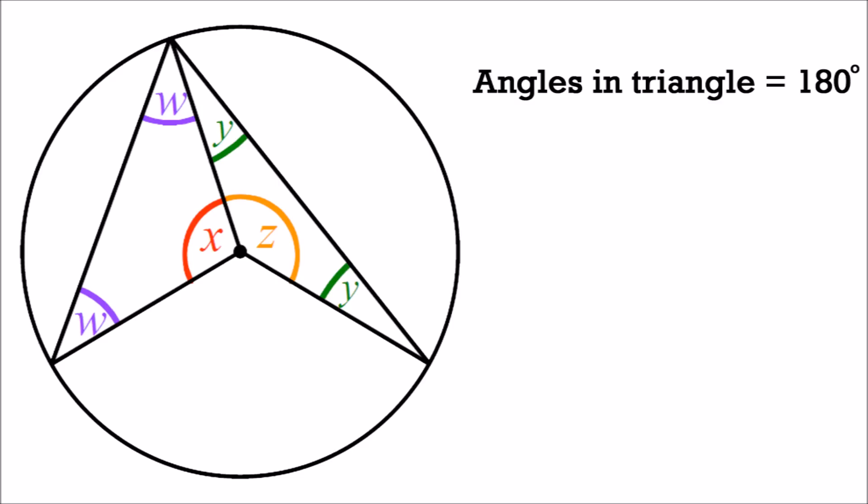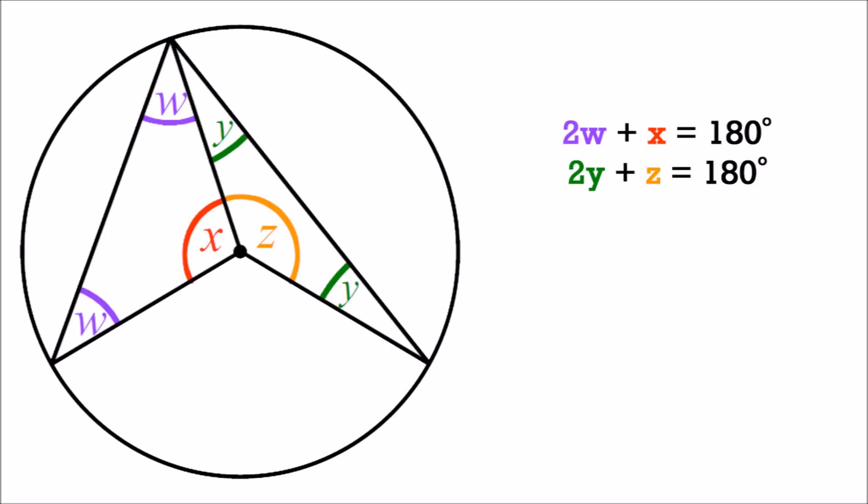The sum of angles inside any triangle is 180 degrees, therefore 2w plus x equals 180 degrees, and 2y plus z equals 180 degrees. So we can rearrange this to get x equals 180 minus 2w and z equals 180 minus 2y.